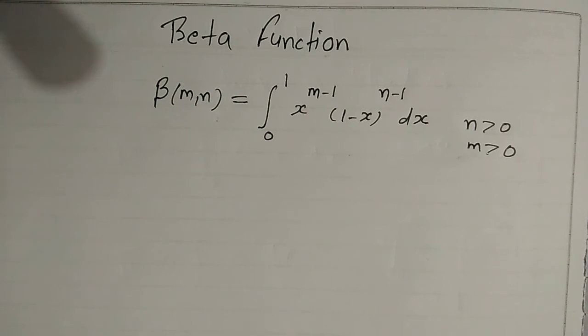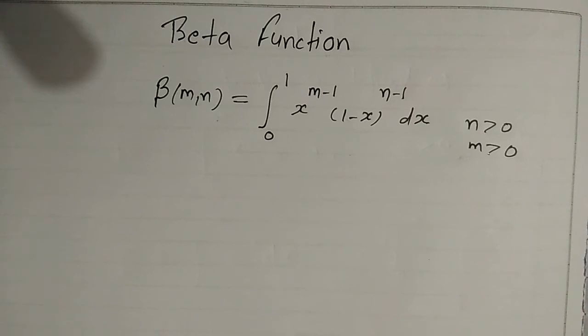So beta(m, n) equals the integral from 0 to 1 of x^(m-1) times (1-x)^(n-1) dx, where m and n are positive. This is the beta function — one special type of integral.